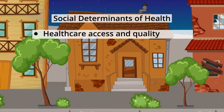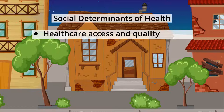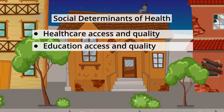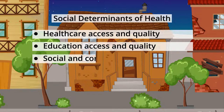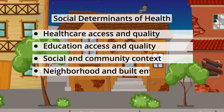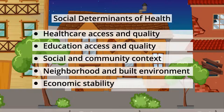These include healthcare access and quality, education access and quality, social and community context, neighborhood and built environment, and economic stability. Each of these factors influences what people put into their bodies, if and when they seek healthcare, and the amount of stress their body faces, which affects their overall health outcomes.